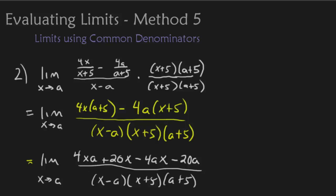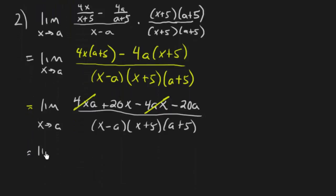Alright, so what happens is, you can see on the numerator, these two cancel, which is good. And we're left with the 20x and the 20a. 20x minus 20a. And again, on the bottom, we don't do anything, so we just rewrite that same denominator.